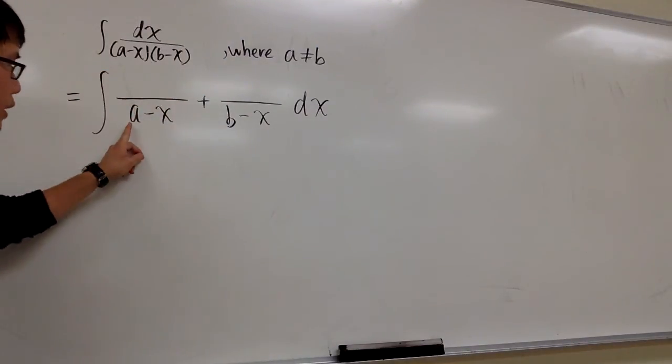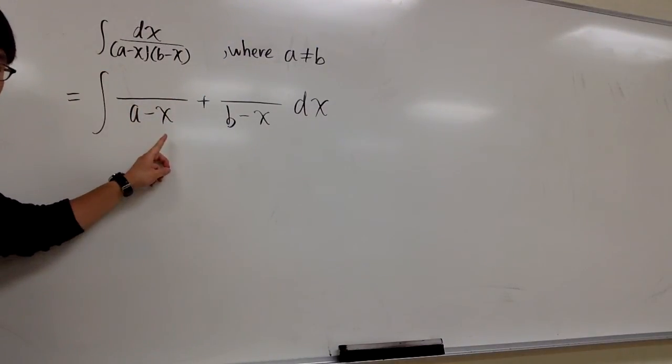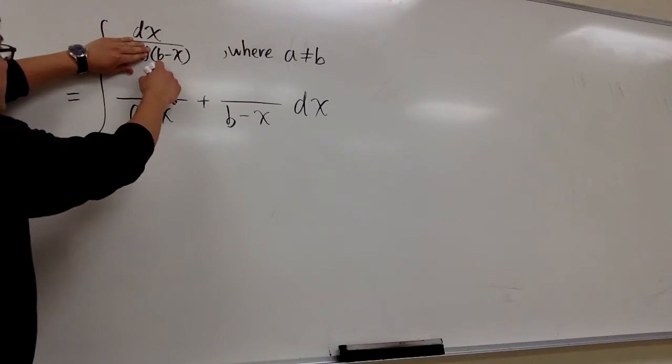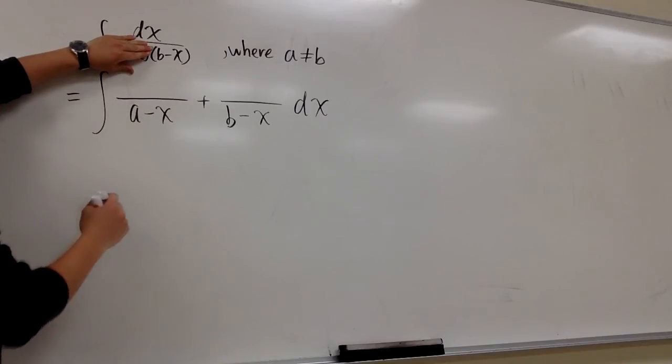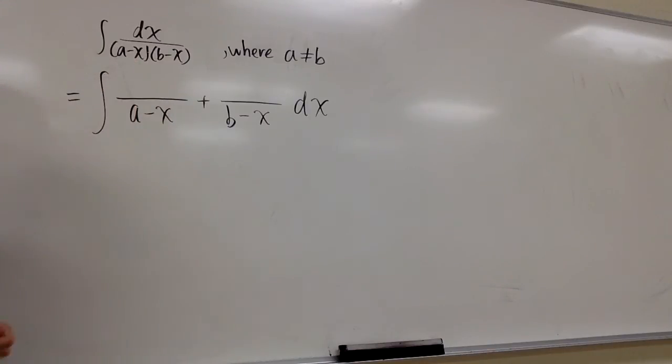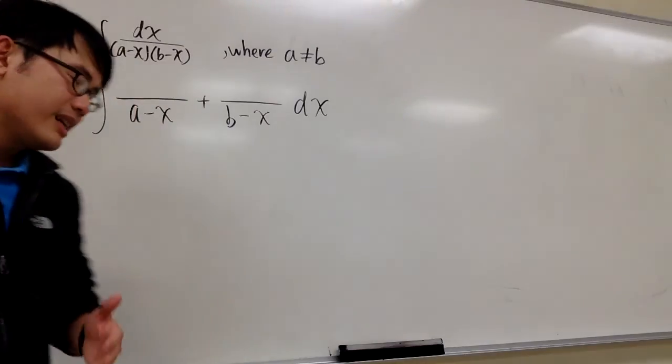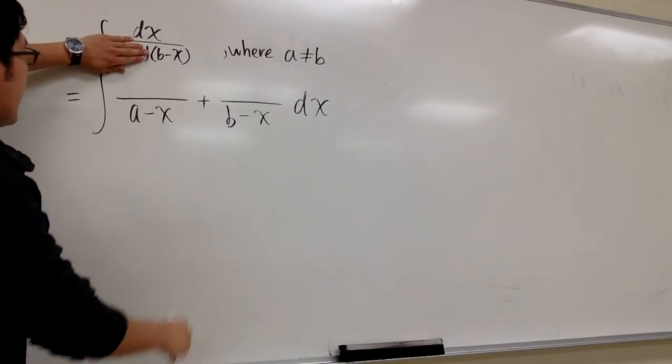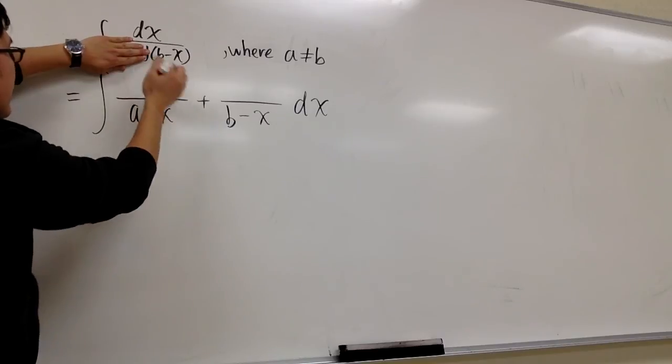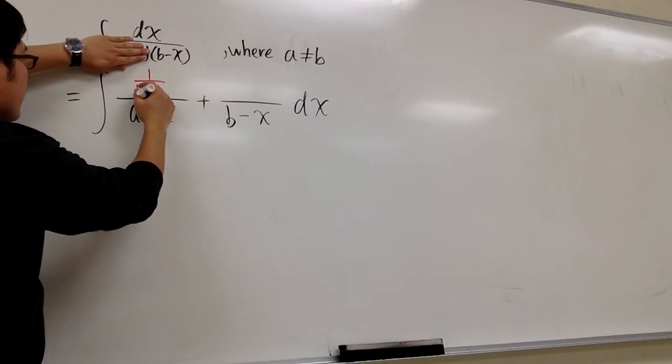To figure out the number on top of the factor (a-x), I have to go back to the original, and I will cover this up. So I just have 1 over (b-x) left, but then I'm going to choose x being equal to a. Why a? Because if x is equal to a, I could have made this equal to 0. So I cover this up, I plug in x equals a, so we have 1 over (b-a). That will be the number right here, 1 over (b-a).